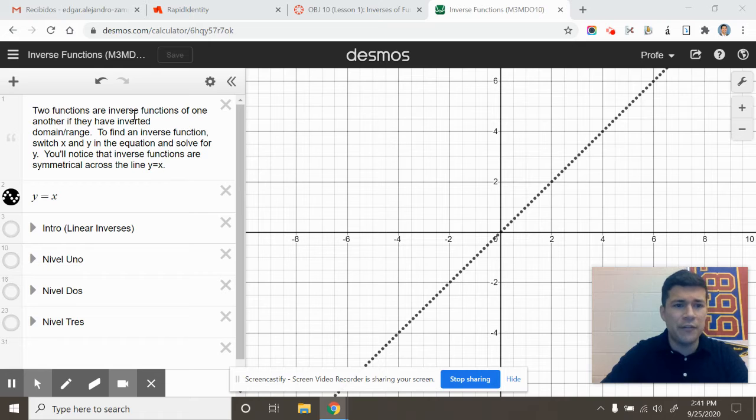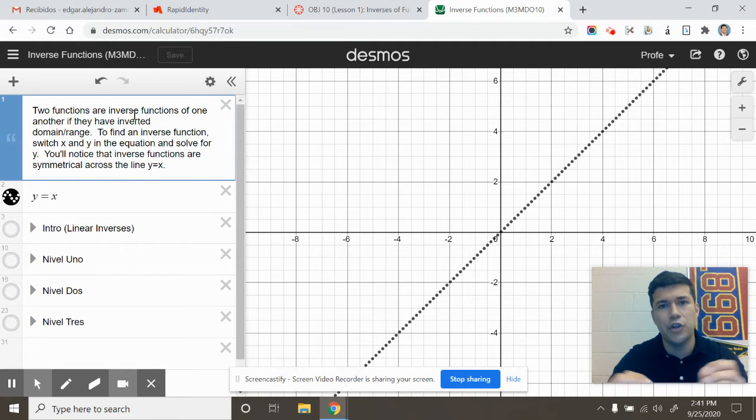But first, let's define inverse. So two functions are inverses if their domain and range are 100% completely inverted. So the domain of f(x), for example, could be the range of g(x) and vice versa.